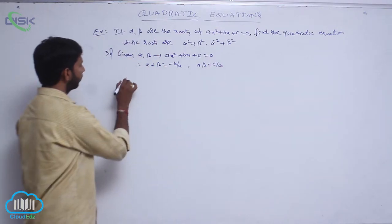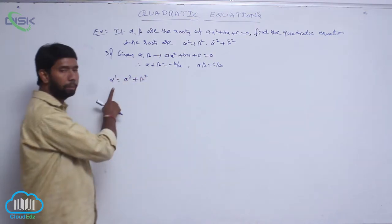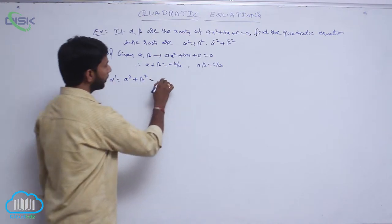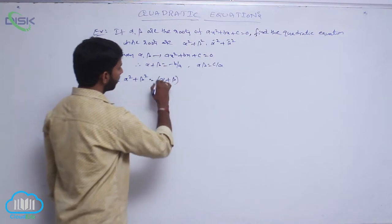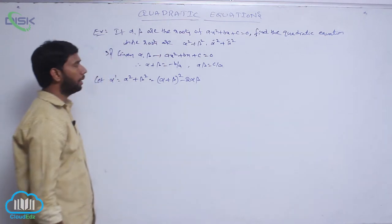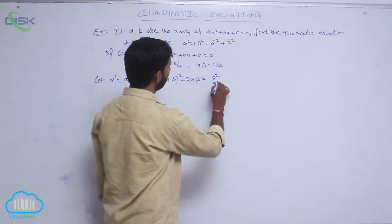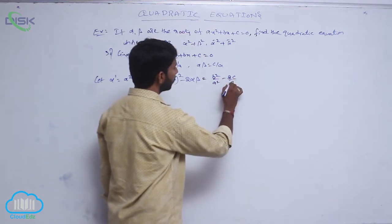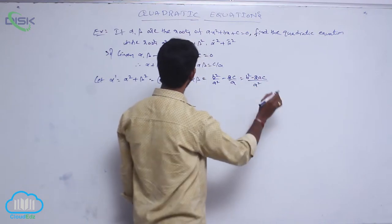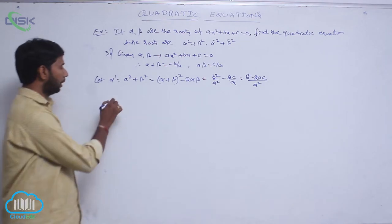Now find the value of α² + β², let α' = α² + β². Since a² + b² = (a + b)² - 2ab, we get α' = (α + β)² - 2αβ = b²/a² - 2c/a = (b² - 2ac)/a².